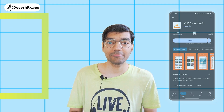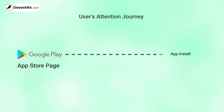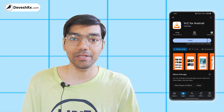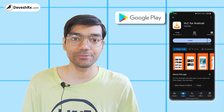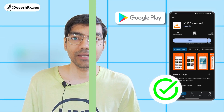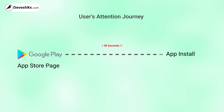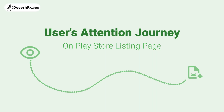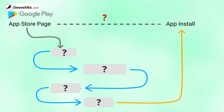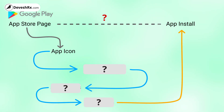Now let's focus on the Google Play Store listing page. To optimize it, we have to consider the user attention journey, because attention is everything on Google Play Store. Your app listing should capture attention so well that a user decides to install in less than 30 seconds. The first 30 seconds of a user landing on your listing are very important. There are four elements on the Play Store listing to focus on, and we will discuss each one.